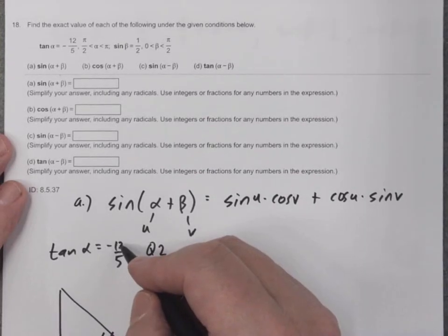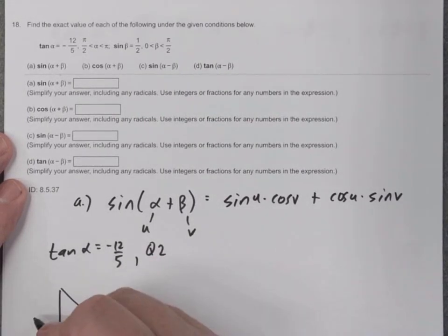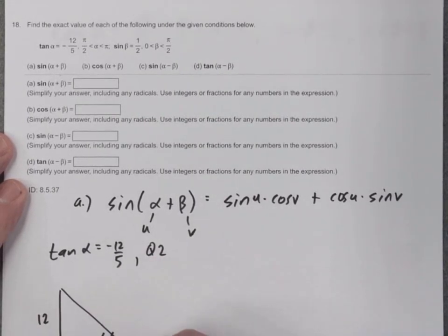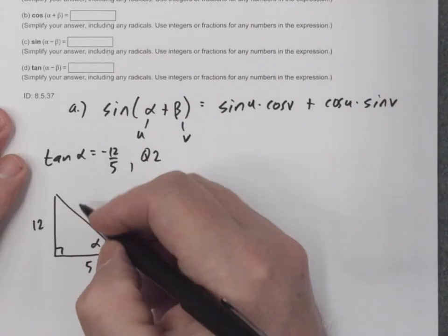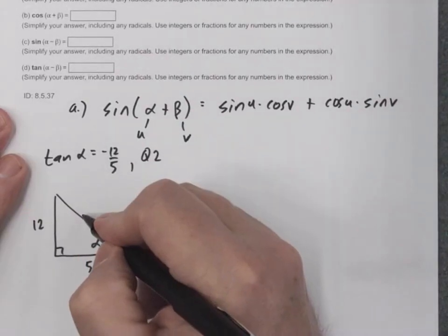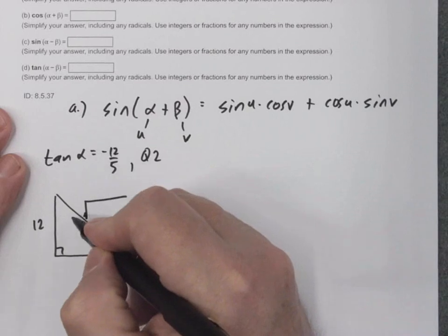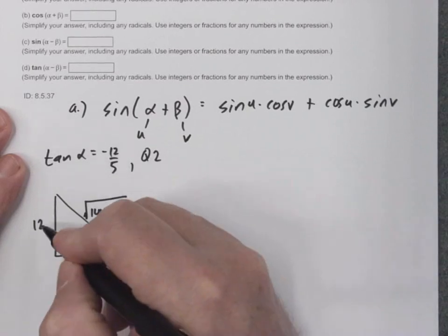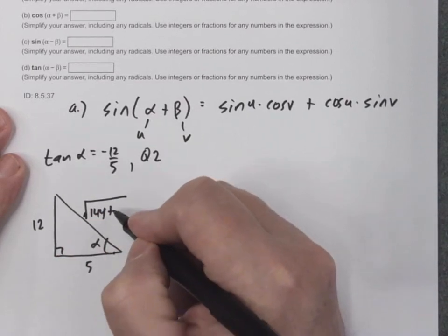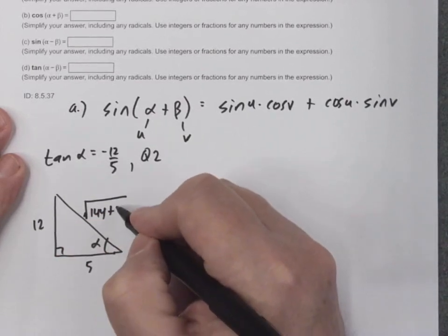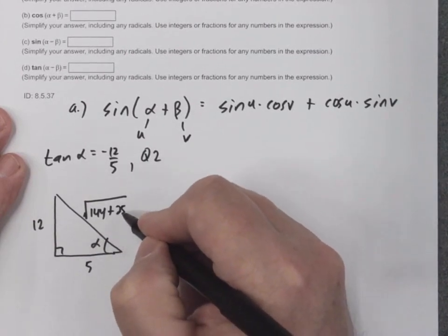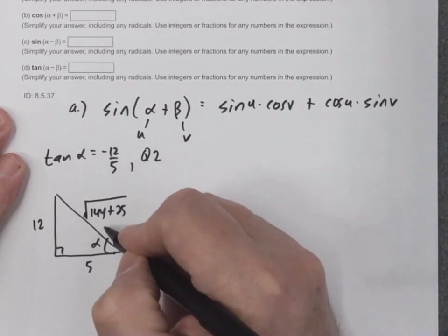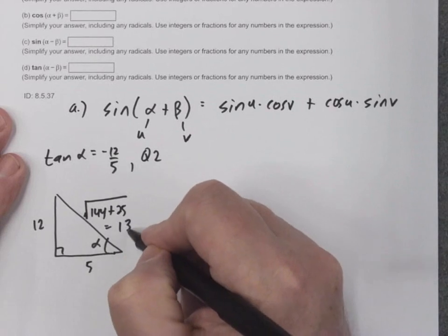I'm going to construct a triangle for alpha. Tangent is TOA — opposite over adjacent. Using the Pythagorean formula for the hypotenuse: 12 squared plus 5 squared equals 144 plus 25. The square root of 169 is actually 13. So the hypotenuse is 13.